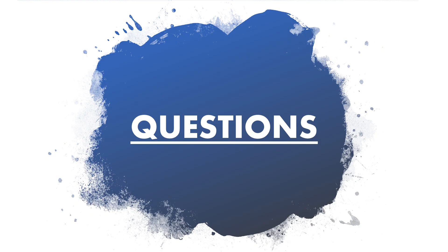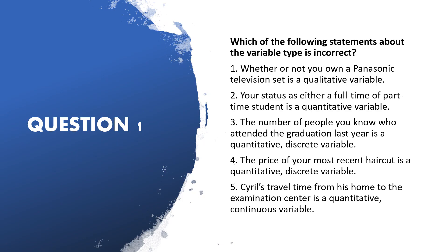Now let's look at some examinable questions. The first question asks: 'Which of the following statements about variable type is incorrect?' Statement one: 'Whether or not you own a Panasonic television set is a qualitative variable.' What do you think — is it a qualitative variable?